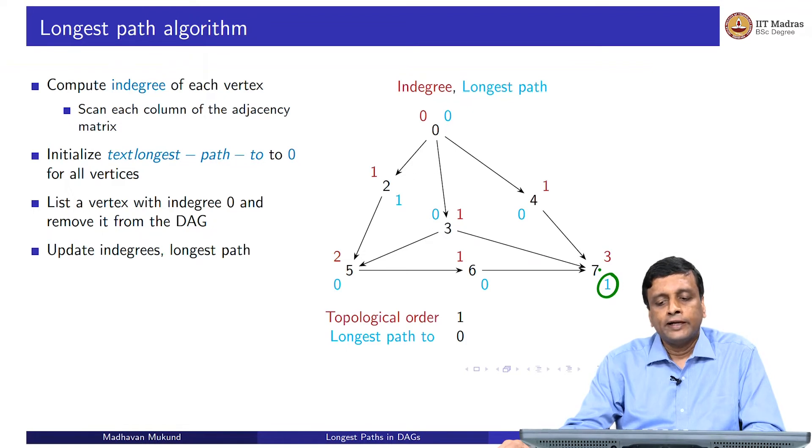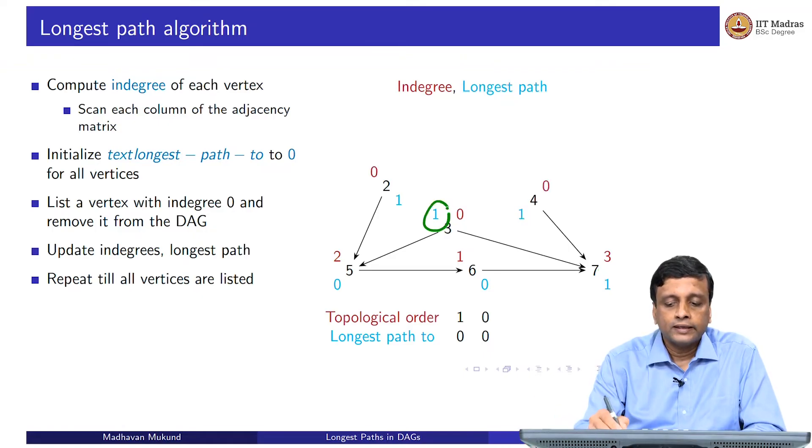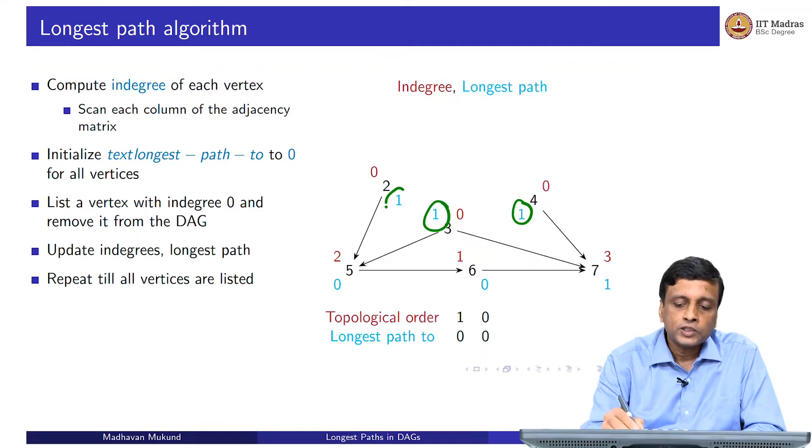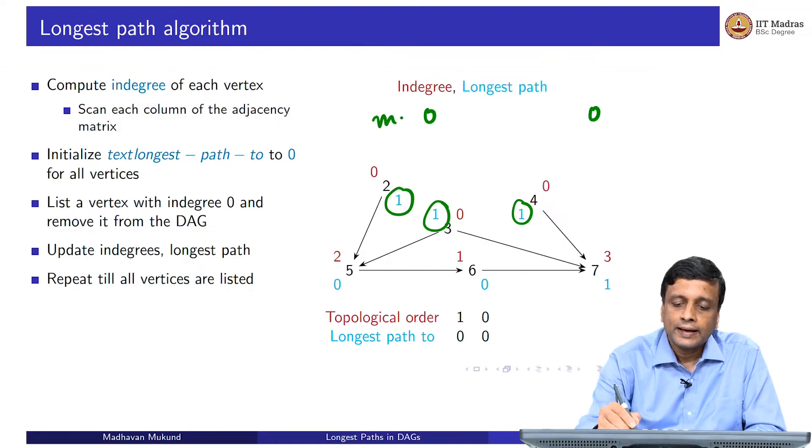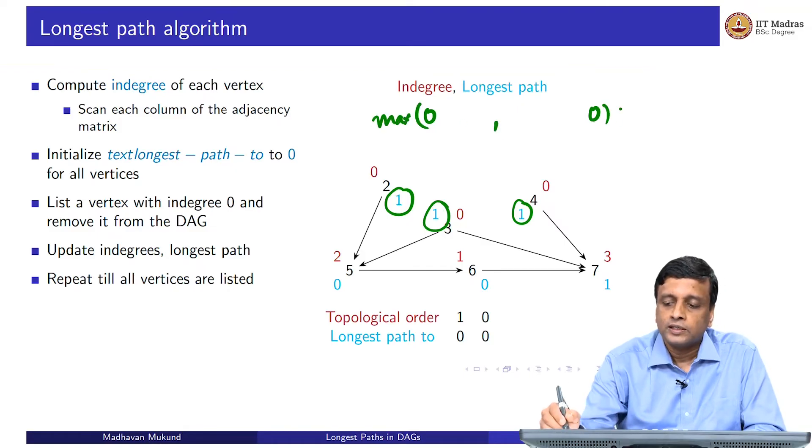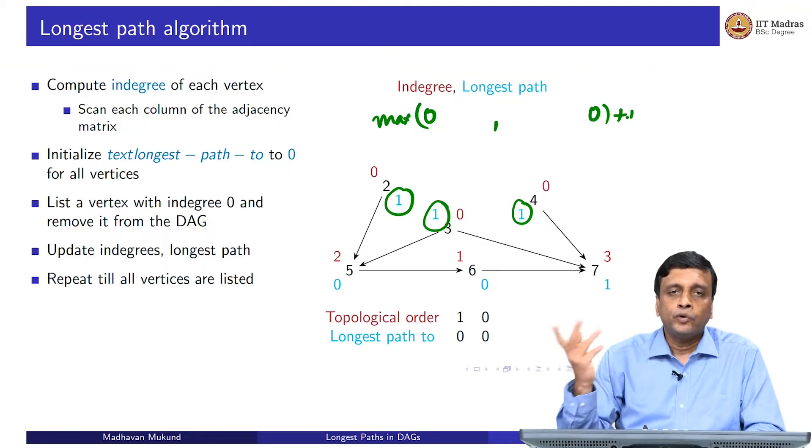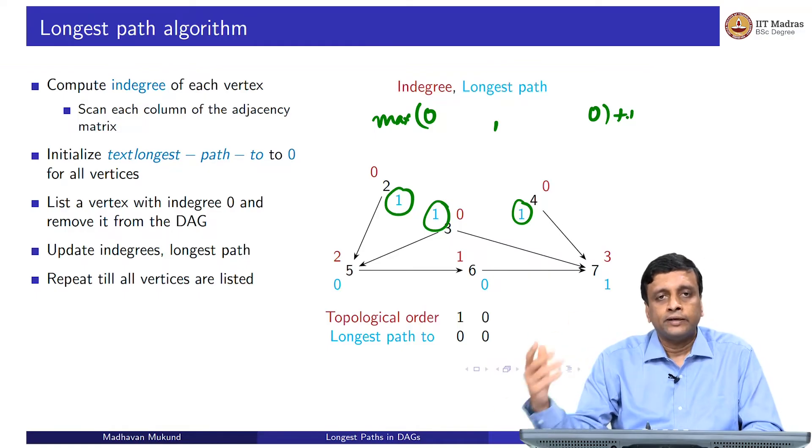If I enumerate 0, then again I know that its longest path was 0, but it will now contribute 1 to both 3 and 4. Notice that the longest path to 2 remains 1 because the longest path to this was 0, the longest path to this was 0. It is the maximum of both these quantities plus 1. So I already knew it was 1. Having enumerated the new vertex 0 does not give me any new information about the longest path to vertex 2.